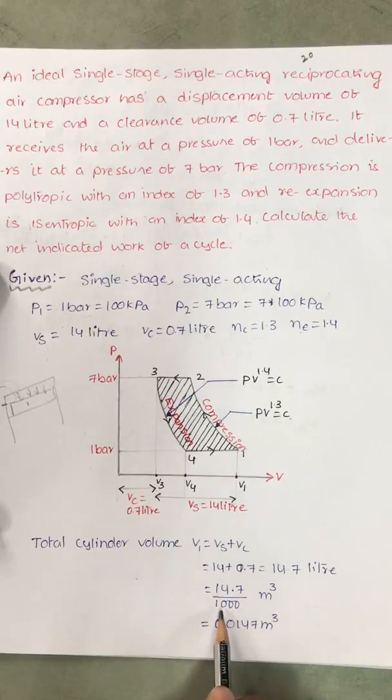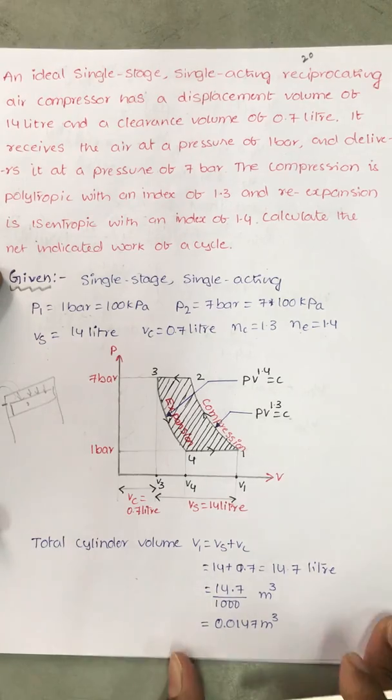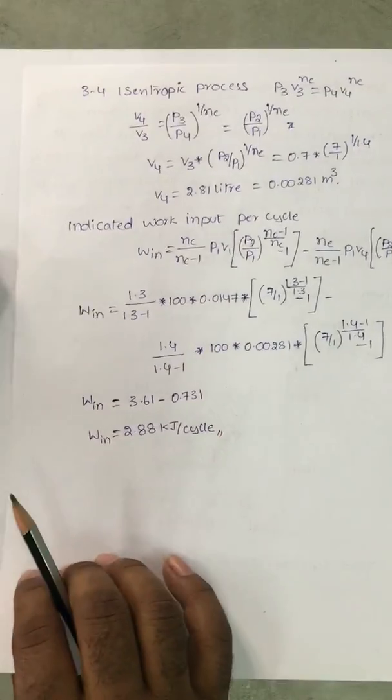14.7 by 1000 meter cube. 1 meter cube is equal to 1000 liters. So 0.0147 meter cube per cycle.